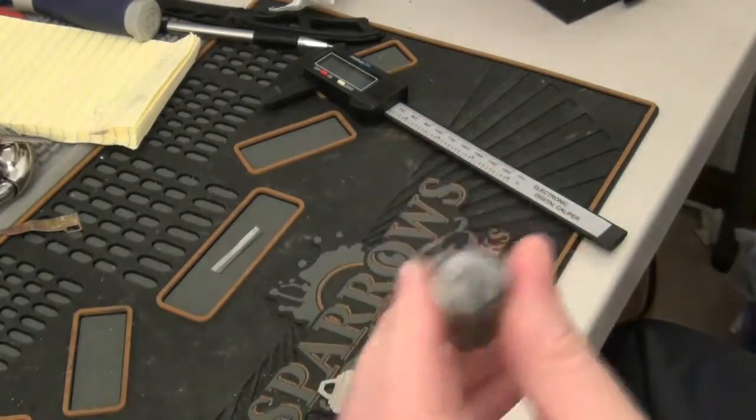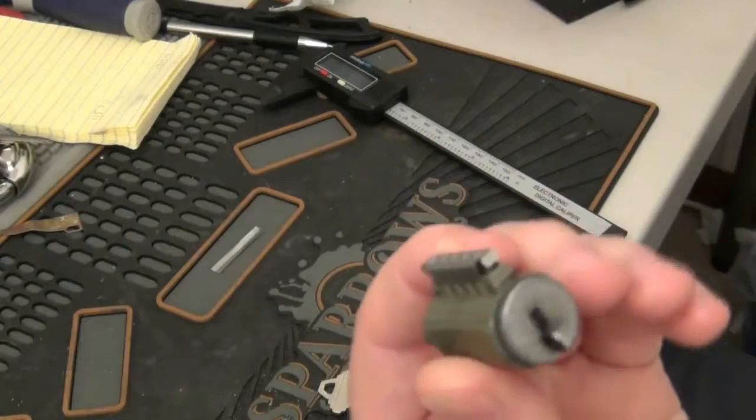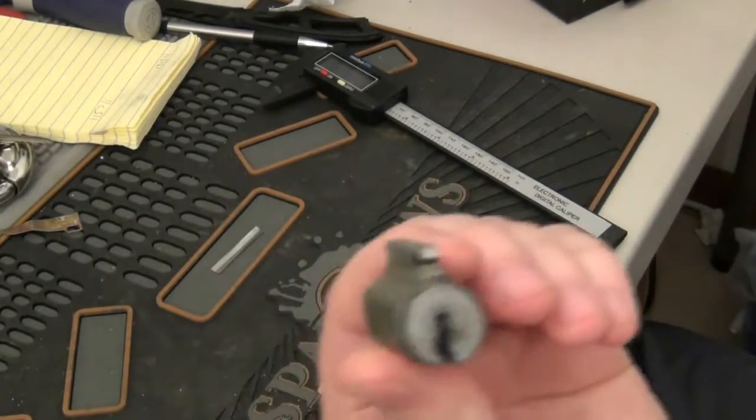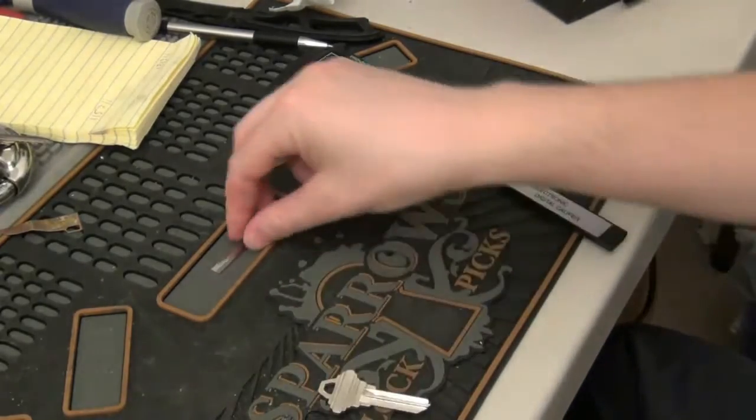All right, in this video I'm going to demonstrate how to shim a lock open so you can rekey it. I've got a slag doorknob cylinder, and I don't have a key for it.